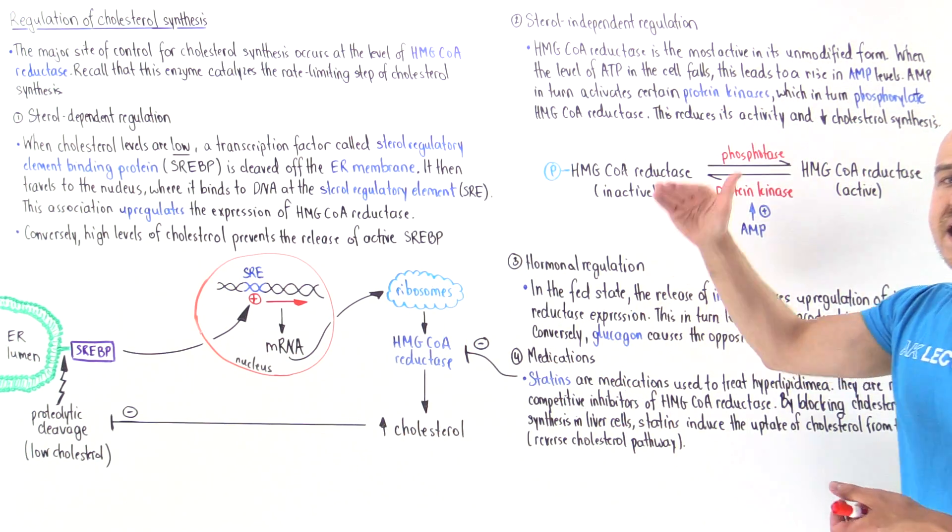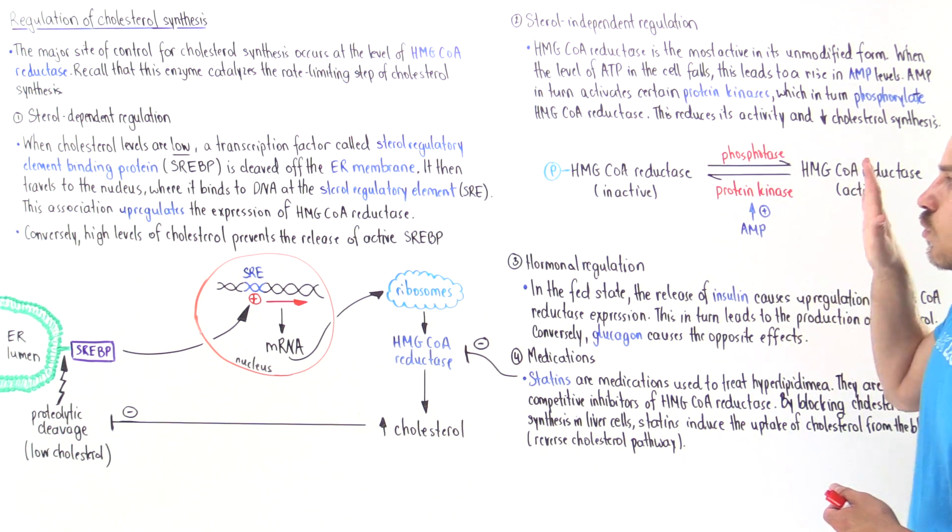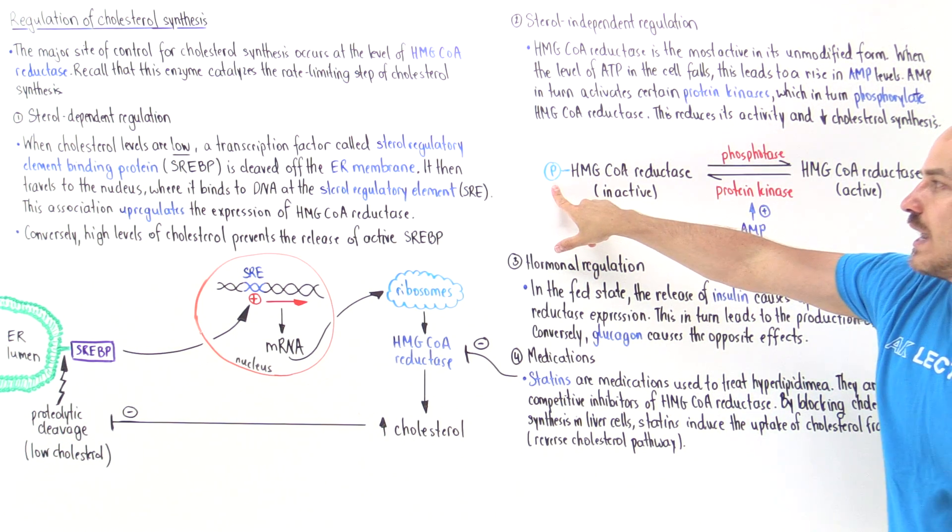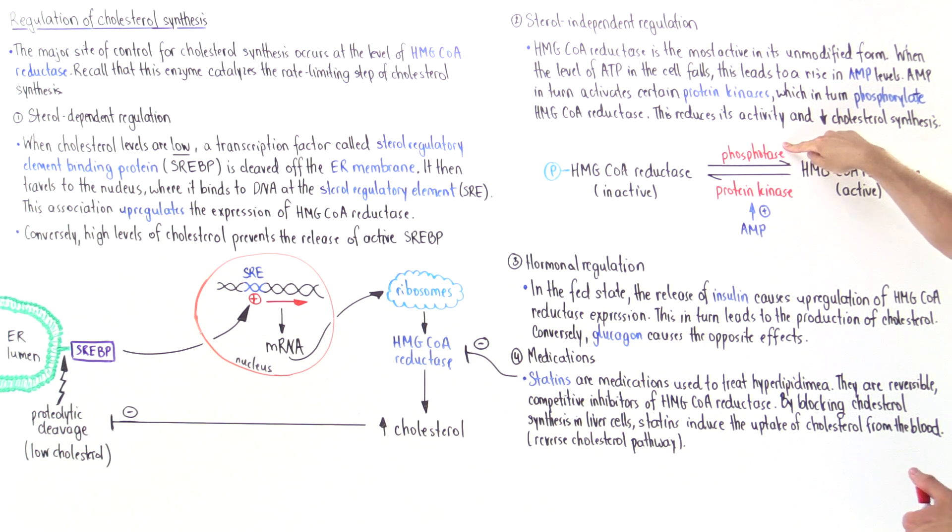Conversely, if we have high levels of ATP, then we're going to stimulate the dephosphorylation of this by these enzymes we call phosphatases. So if we have a lot of ATP in the liver cells, we're going to produce a lot of cholesterol.